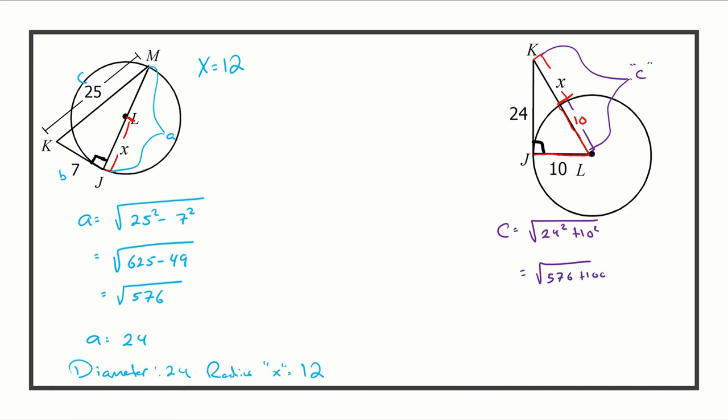We're looking to take the square root of 676, which is exactly 26. Once we subtract 10 from that, we get our x value, which is 16.